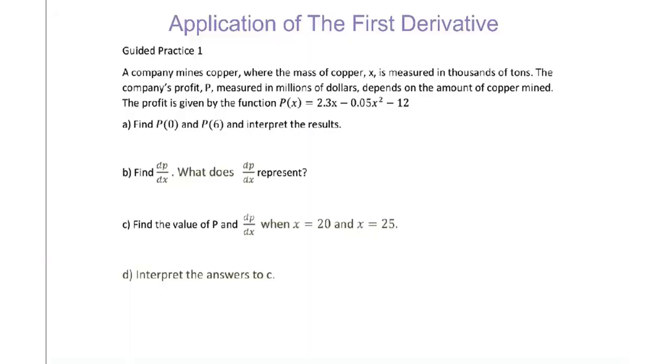This video is about application of the first derivative, Guided Practice 1. A company mines copper where the mass of copper X is measured in several tons. The company's profit P measured in millions of dollars depends on the amount of copper mined. The profit is given by the function P(x) = 2.3x - 0.05x² - 12.